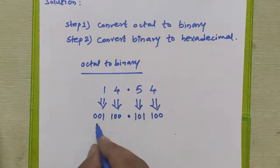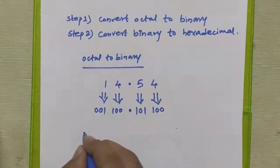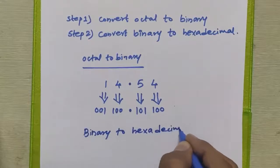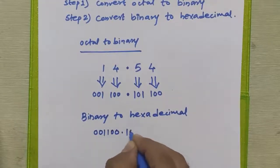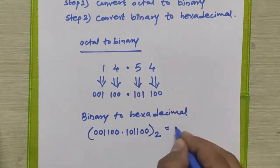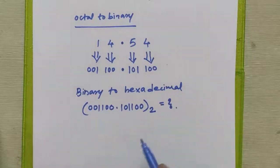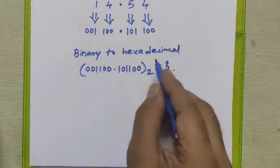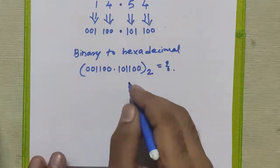Now in Step 2 we convert this binary number to hexadecimal. The binary number obtained was 001100.101100. To convert any binary number to hexadecimal, we form groups of four binary bits and write the equivalent hexadecimal digit for each group.